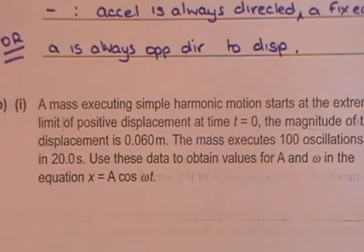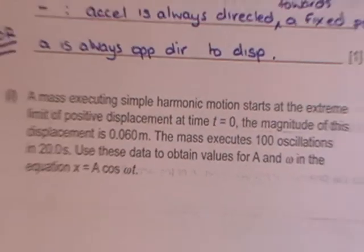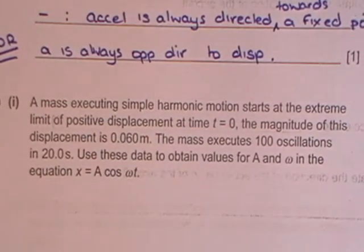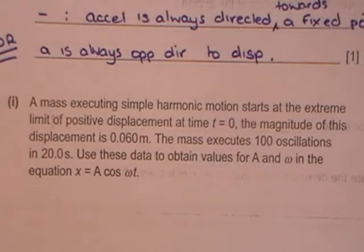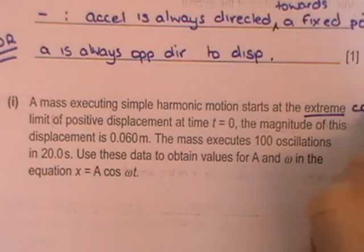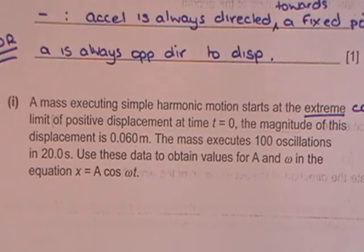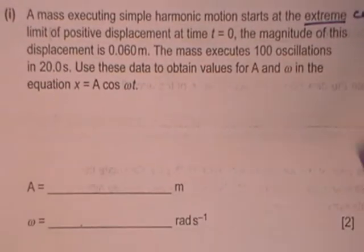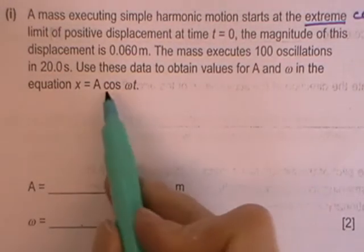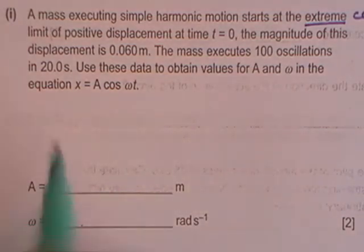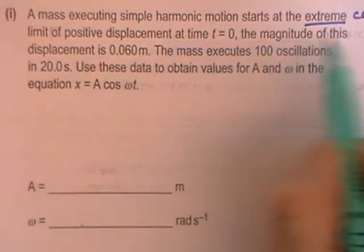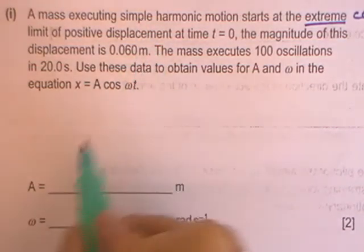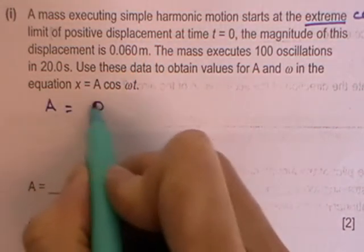Part B, part 1, a mass executing simple harmonic motion starts at the extreme limit of positive displacement. So if you're going to draw a graph, we're talking about a cosine graph at time t equals 0. The magnitude of the displacement is 0.06 meters. If you're talking about it starting at the extreme limit and the magnitude of the displacement is 0.06, then that's the amplitude. So amplitude is 0.06 meters.